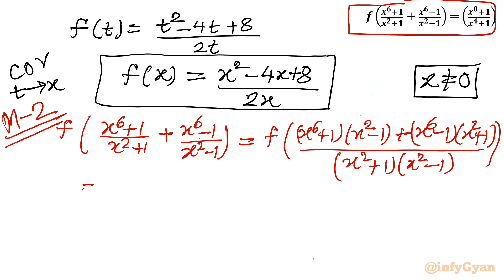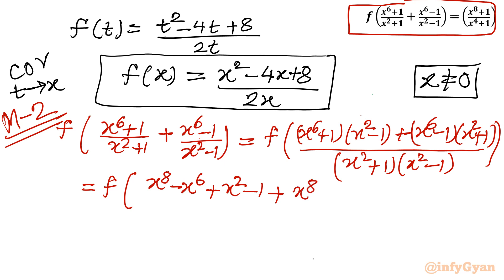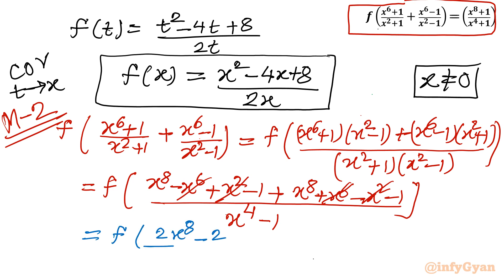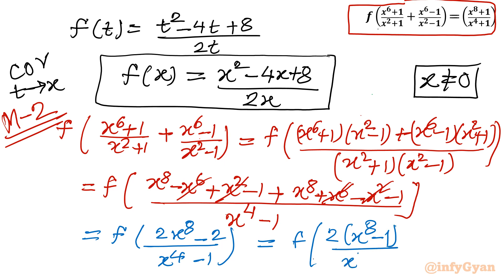After expanding: the first product gives x⁸-x⁶+x²-1, and the second gives x⁸+x⁶-x²-1. The denominator is (x²+1)(x²-1) = x⁴-1. The x⁶ and x² terms cancel, giving 2x⁸-2 in the numerator. So f[(2(x⁸-1))/(x⁴-1)].